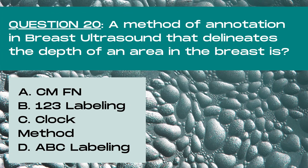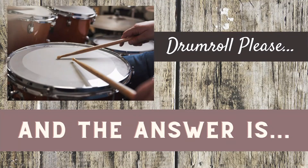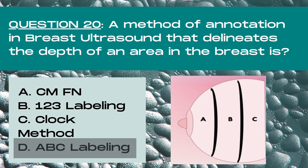Question 20. A method of annotation in breast ultrasound that delineates the depth of an area in the breast is: A centimeters from nipple, B 1-2-3 labeling, C clock method, or D ABC labeling? The answer is D, ABC labeling method. The ABC method of labeling splits the breast into three equal depths: A represents superficial depth in the breast tissue, B represents mid depth, and C represents deep depth in the breast tissue.